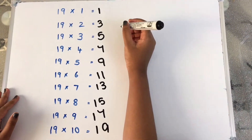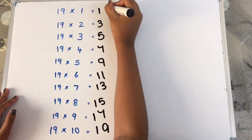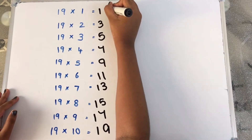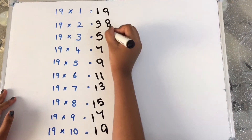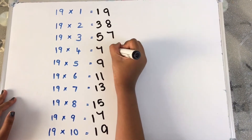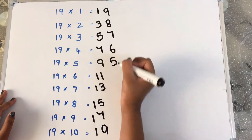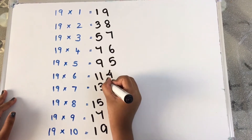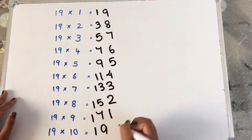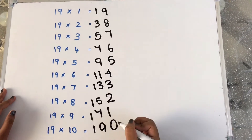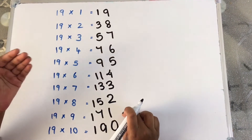Now, we will write the reverse number from 9: 9, 8, 7, 6, 5, 4, 3, 2, 1, 0. So, this is the answer for the 19 table.